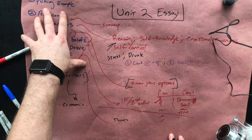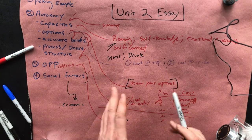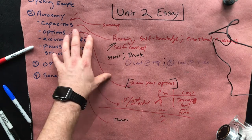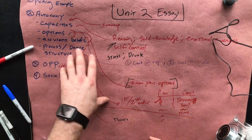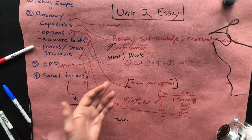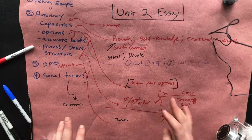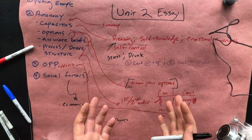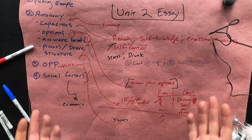You'll probably not be able to resist picking an example at the very beginning when you start working on this, but you don't want to be too committed or tied to it, because what you want is an example that's going to allow you to explain what autonomy is and illustrate some of the problems that can arise when a person is trying to be autonomous. If you need to pick an example off the bat, that's fine — just don't get too tightly tied to it. It's very easy to change the example once you've gone all the way through the paper if you've realized it doesn't do what you want it to do.